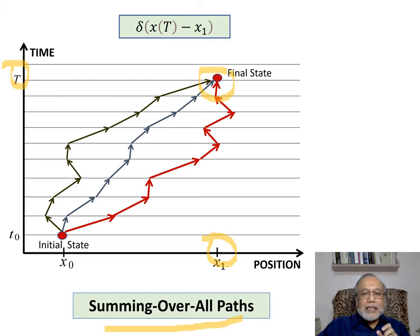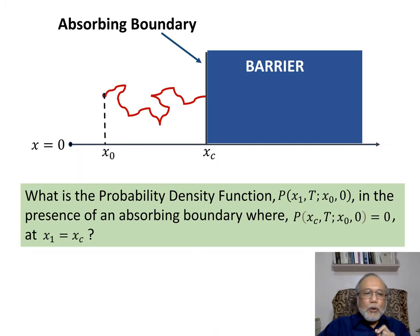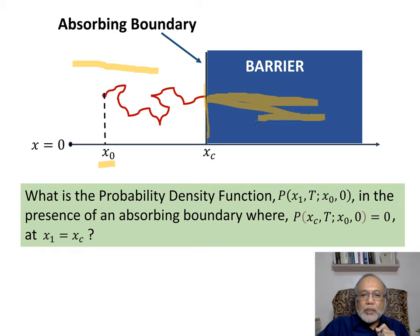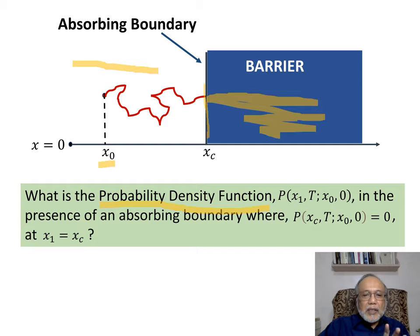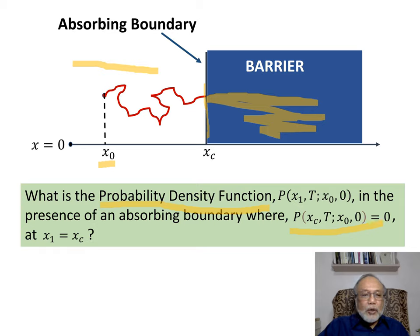Now consider this situation: suppose a fluctuation starts at x-0 and could go anywhere in the allowed region, but if it hits a boundary, it is absorbed. It can never go into the forbidden region, colored blue in the slide. We ask: what is the probability density function for a stochastic process in the presence of an absorbing boundary satisfying a Dirichlet boundary condition? That means the PDF vanishes — equals zero — when the final endpoint x-1 equals x-c, the location of the boundary. To solve this, we use the method of images.